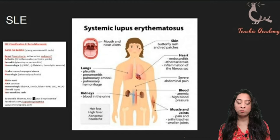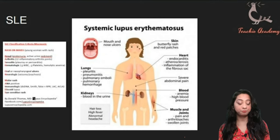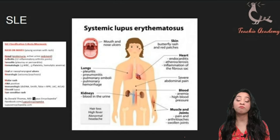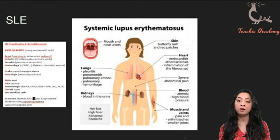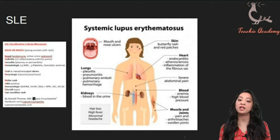Two important associations to remember with SLE are antiphospholipid antibody syndrome and drug-induced lupus. Antiphospholipid antibody syndrome may appear on your exam as a female with thrombophilia or a history of multiple miscarriages. It is related to anticardiolipin antibodies and represents a state of thrombosis that can be associated with SLE. It can be problematic in females trying to get pregnant as it increases blood clotting tendency.